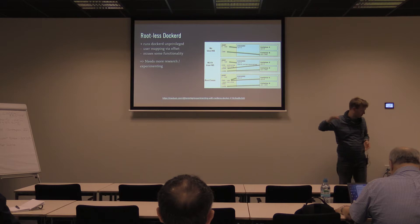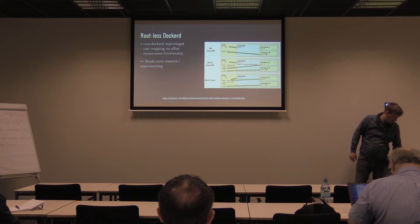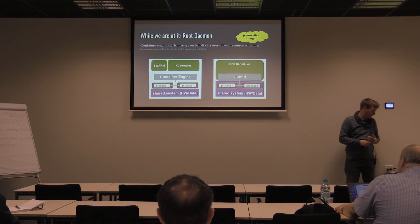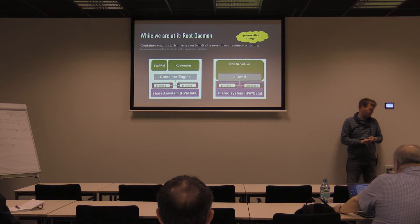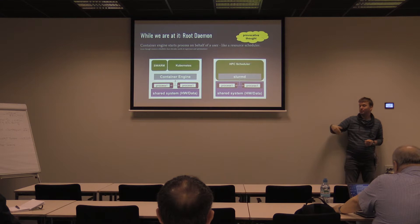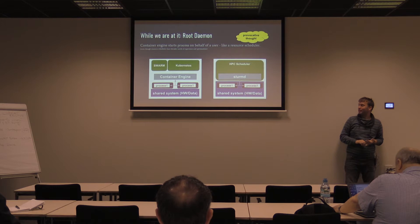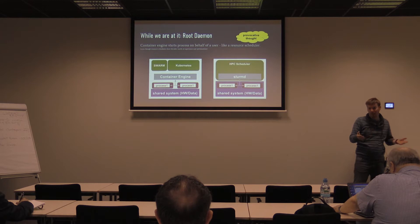While we're at it — a provocative thought. For the last five years I've heard that the root daemon is a problem. But what is the SLURM daemon other than the Docker engine in its infancy? SLURM starts a process on behalf of a user, and the Docker daemon starts a process on behalf of the user. SLURM is much older and more mature, and Docker has less focus on this kind of scheduling — but in essence they're the same. I don't fully understand the fuss.